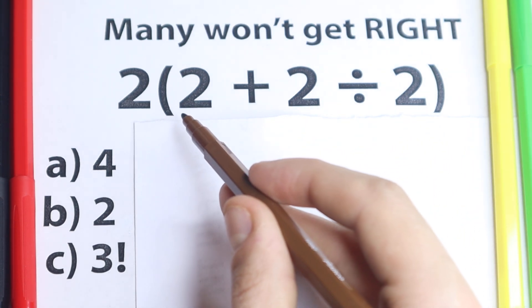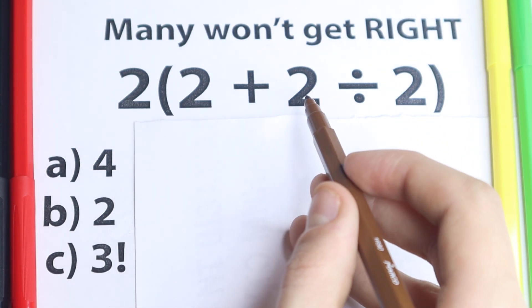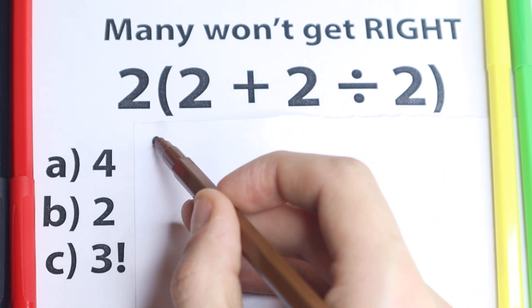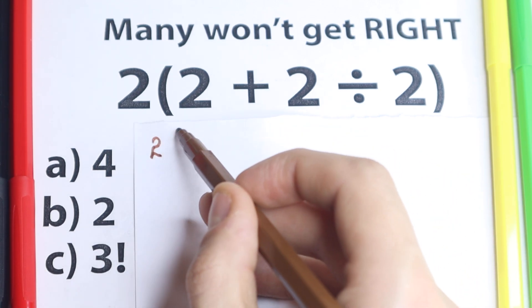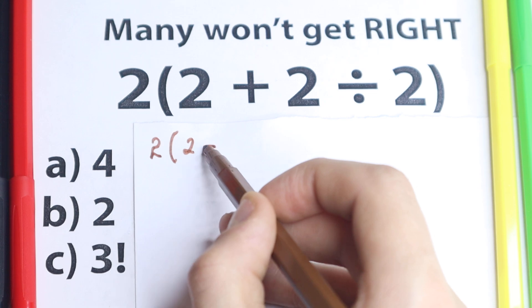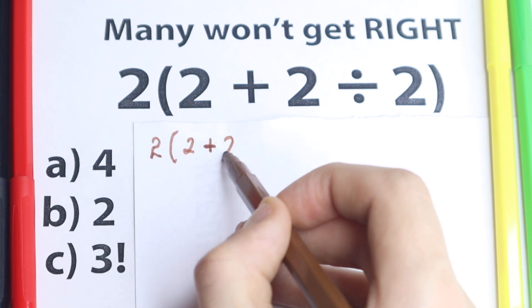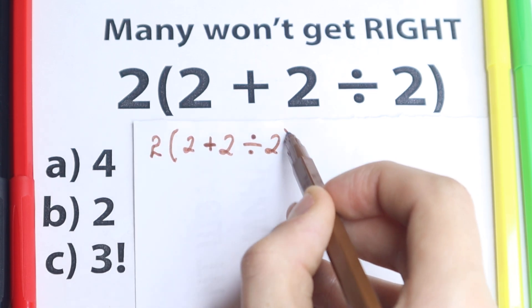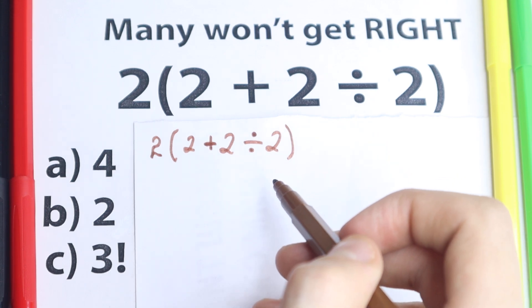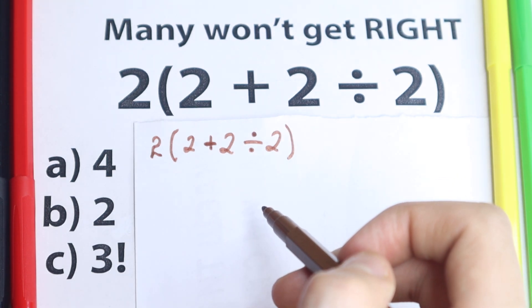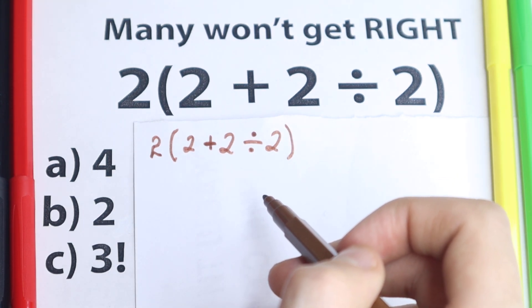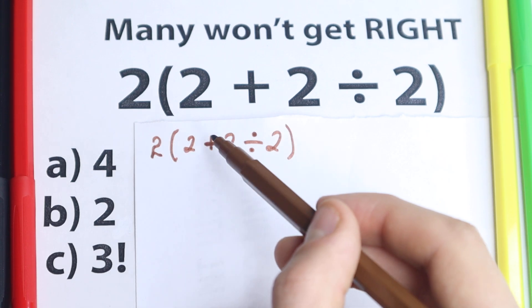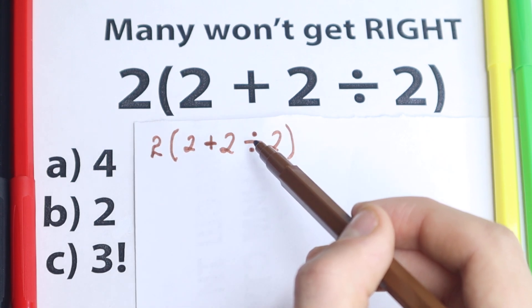Okay, here is our question. We have 2 and in parentheses 2 plus 2 divided by 2. Let's rewrite this question right here. So here is our question and let's try to solve it correctly. First of all, right here we have multiplication, right here we have addition, and right here we have division.